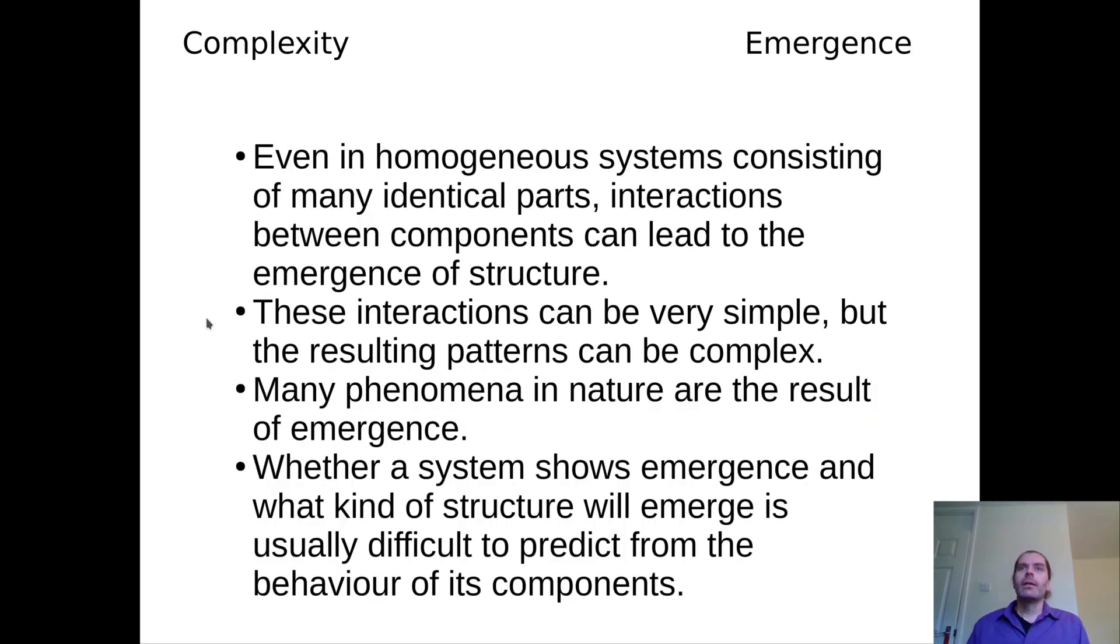So to sum this up, even in homogeneous systems with no discernible structure yet consisting of many identical parts, interactions between those elements can lead to the emergence of structure. Usually this happens through the escalation of small stochastic variations. These interactions that can lead to emergent structure can be extremely simple. As we saw in the swarm example, there are three really, really simple rules that lead to a macroscopic pattern. And there are many phenomena in nature that are the result of emergence. Whether a system shows emergence and what kind of structure we will get at the end is very difficult to predict if we only know the rules of the system.